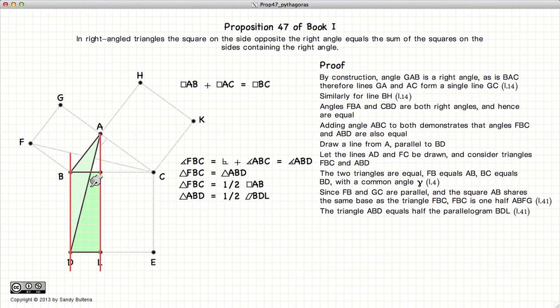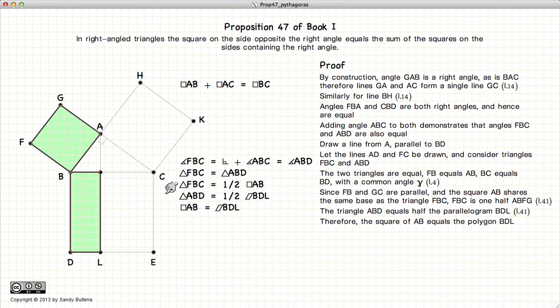Now if we look at our rectangle, here you can see that, again, we share a common base and common parallels. So this rectangle is equal to twice the area of our triangle. Now these two triangles are equal, so consequently the areas of the square and the rectangle are also equal. And just for simplicity, I'm going to call this A squared, and since the area is equal, this is also equal to A squared.